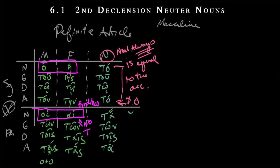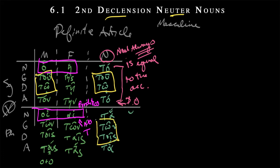What I want to say here, and the reason why we did this review before even getting to the second declension neuter nouns, is this is what we're going to see. We're going to see this pattern — the second declension pattern, as we'll discover — appear also in the neuter nouns. Just as the second declension masculine nouns had endings very similar to our masculine article, we're going to have second declension neuter nouns also looking very much like our neuter article.